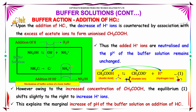However, owing to the increased concentration of CH3COOH, the equilibrium shifts slightly to the right to increase H+ ions. This explains the marginal increase of pH of the buffer solution on addition of hydrochloric acid.